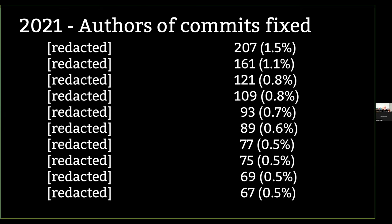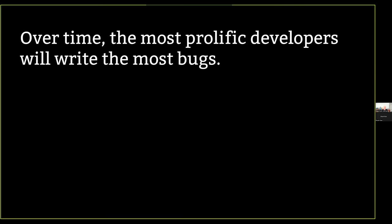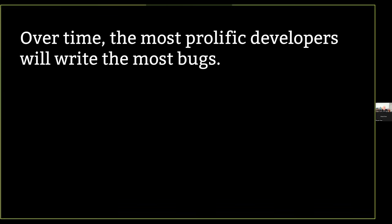We're all human. We all make mistakes. I've written a lot of fun security bugs; I've fixed a lot of security bugs — hopefully one more than the other. You can't keep people out. The most prolific developers for any project — closed, open, anything — will write the most bugs. People forget this. To think that you can find out who is trusted and who isn't: your most trusted people are writing the most bugs. So much for that model.